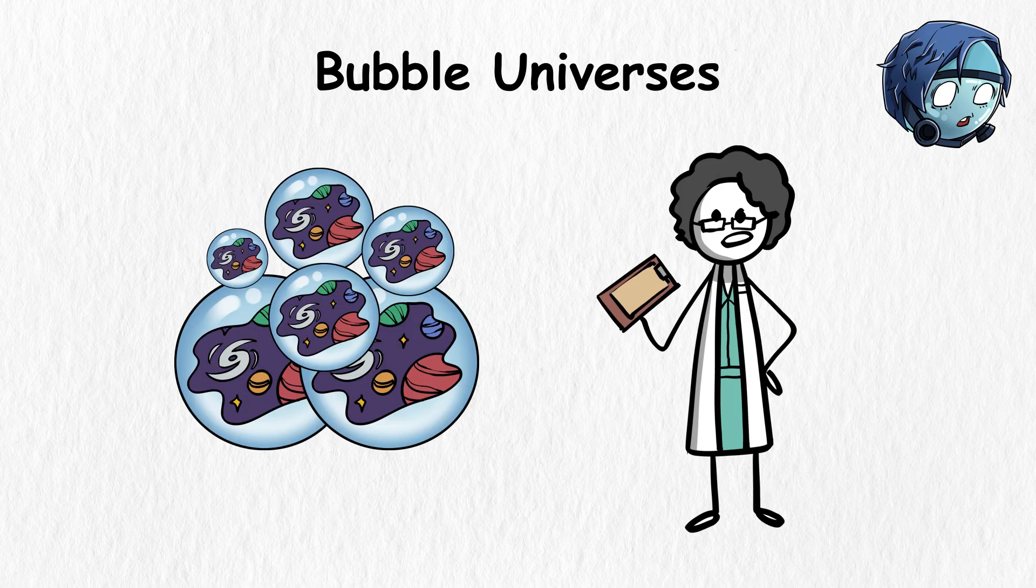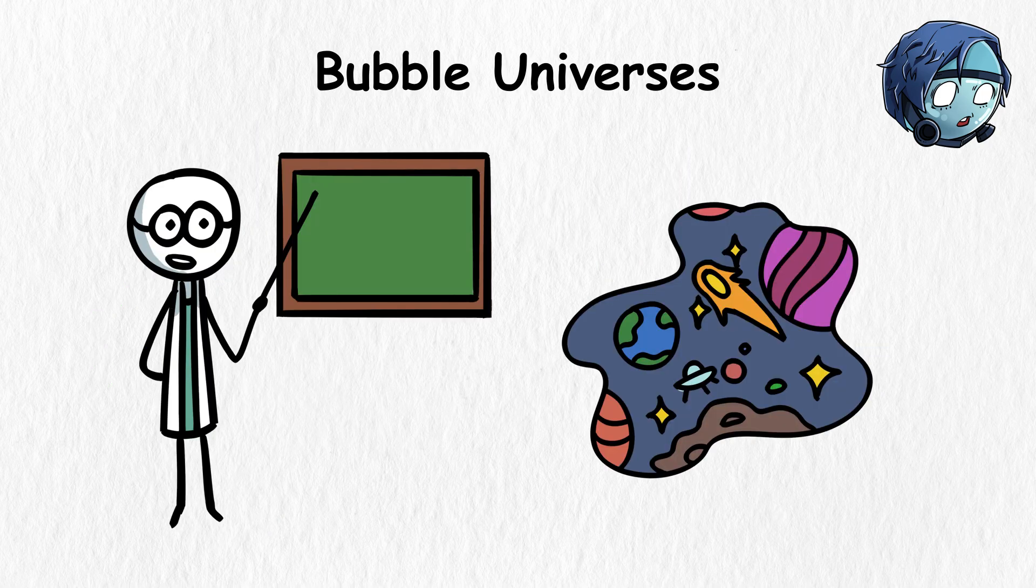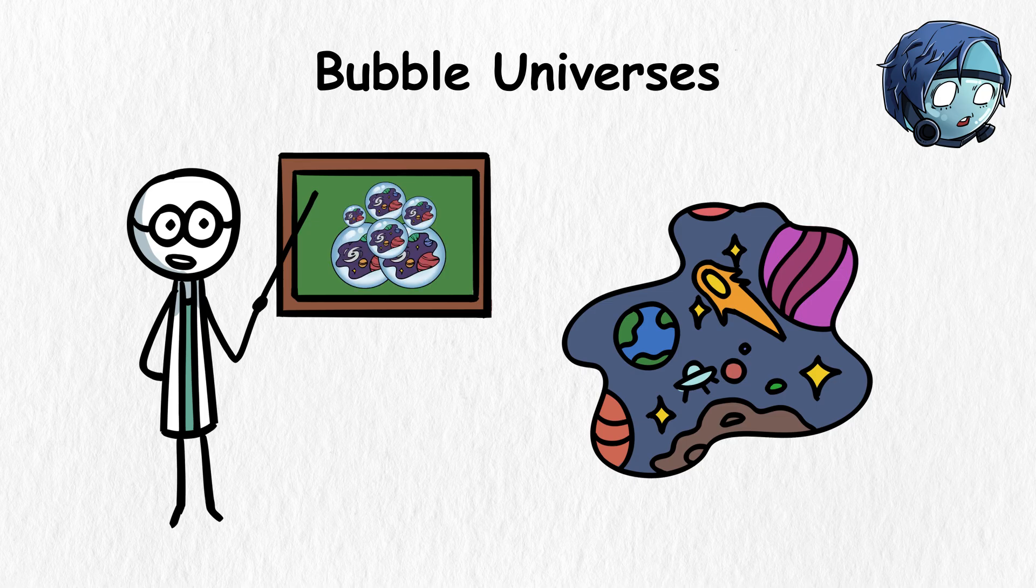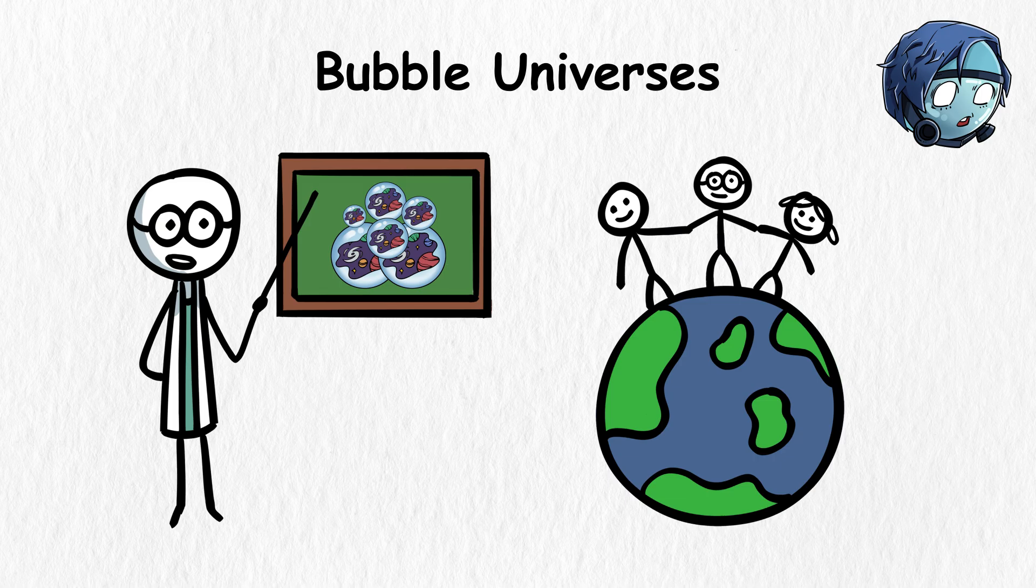Scientists use the bubble universe's theory to explain our universe's properties. If there are many different universes with properties different from ours, we live in a universe with the perfect conditions for survival.